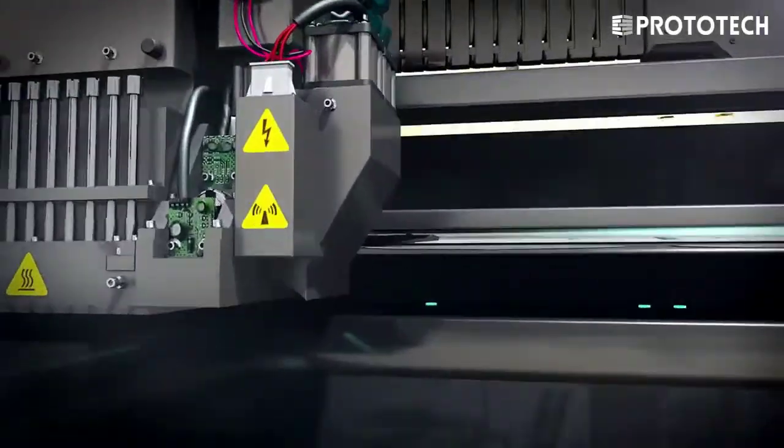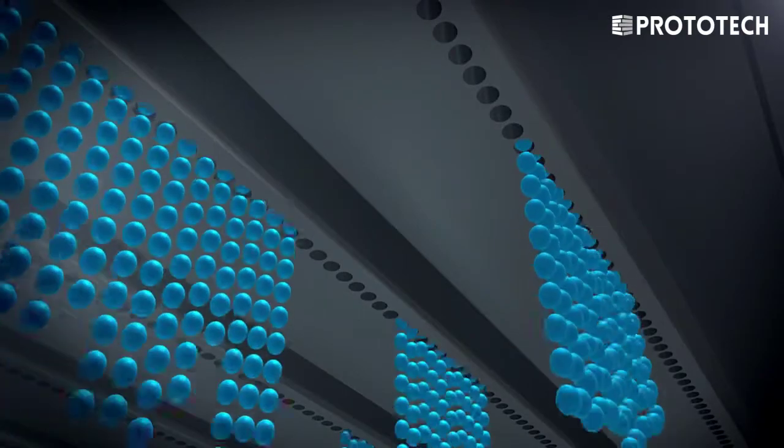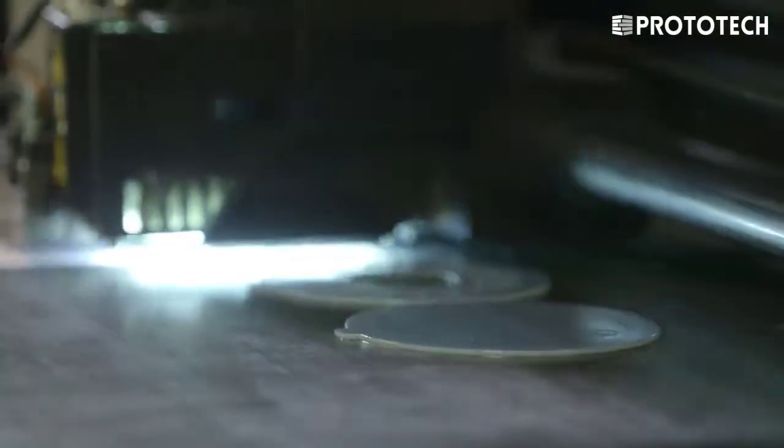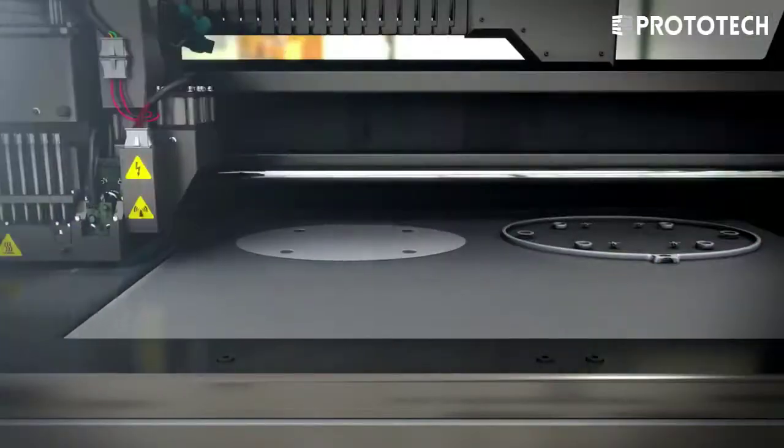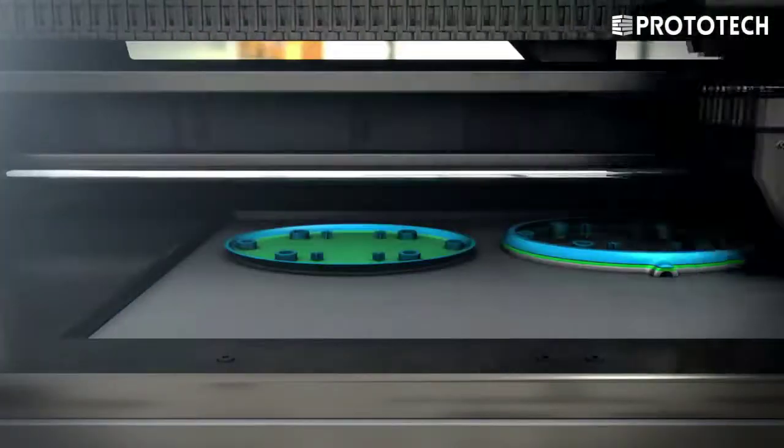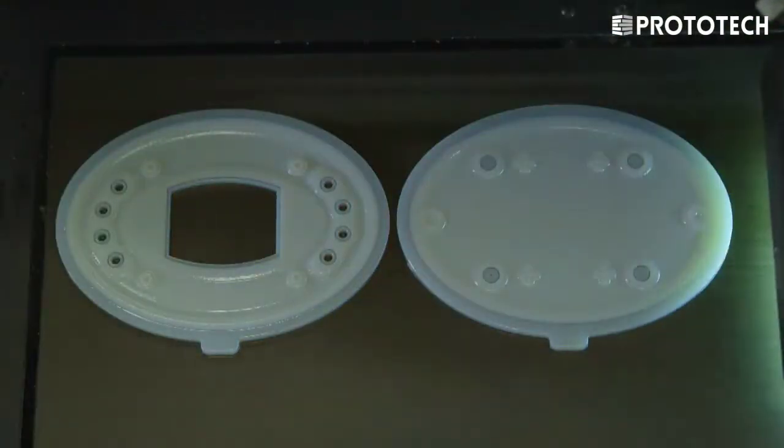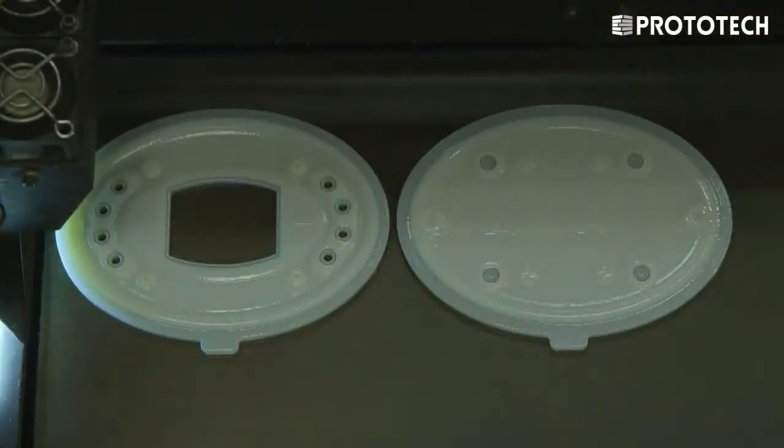So with the PolyJet system, it jets out a thin layer of the photopolymer resin. It cures it with the UV light and then builds a cross section of that part layer by layer. After one cross section is deposited, the platform will drop down, allowing the gantry to pass with layer number two, and then every subsequent layer after that.